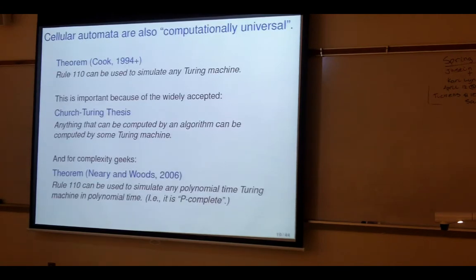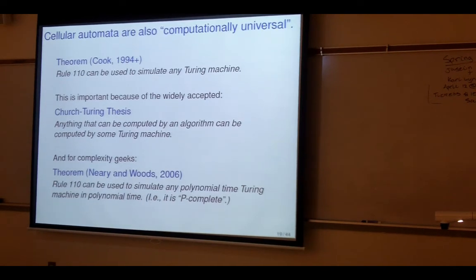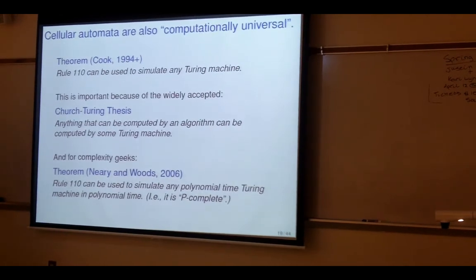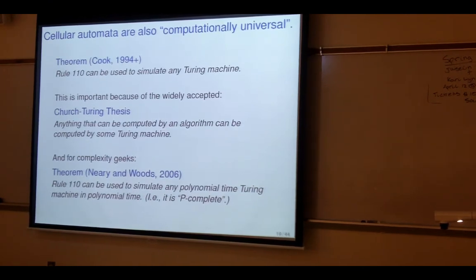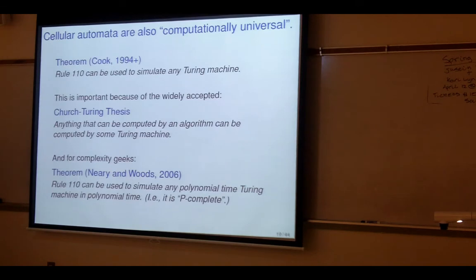Rule 110 was proved to be computationally universal, in the sense that it can be used to simulate any Turing machine. A Turing machine is another mathematical abstraction of a computer — it is widely believed that anything you can compute by any algorithm you can compute with a Turing machine. Whether this is provable depends on how you define 'algorithm.' Many people think computation is completely captured by the idea of a Turing machine, and therefore by one particular cellular automata: rule 110.